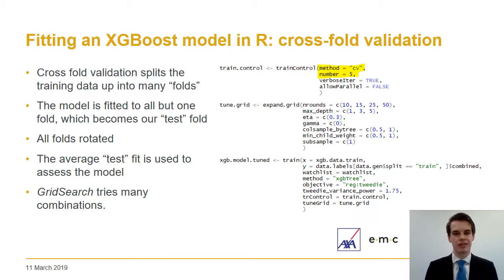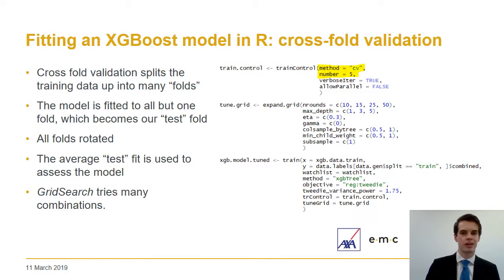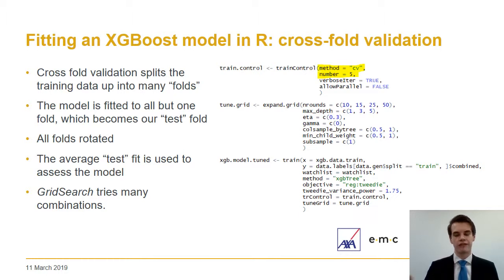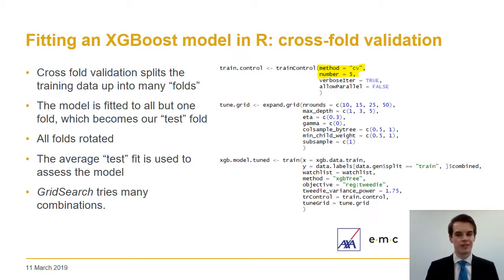Caret can also help through a grid search, where we specify multiple different options for each parameter and Caret runs through every possible combination, then tells us which parameters reduce the error the most. This removes the manual process of changing one parameter at a time. There's also a random grid search where Caret randomly selects parameters, allowing inspection of a far larger range and avoiding getting caught in local minima — for example, searching too high a depth when the best fit is far from what you expect. By testing as many parameters as possible you can be sure your model is tuned as well as it can be.